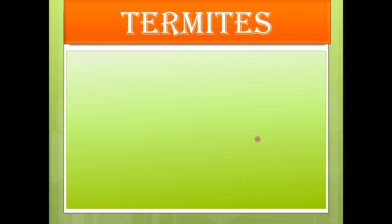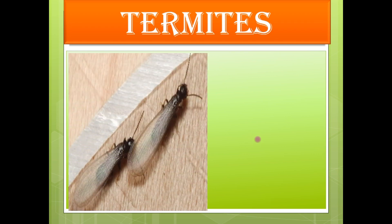The next group is termites. Termites belong to the insect family. Their habitat includes soil, wood, decayed trees, and leaves. Usually they are detritivores, feeding on dead plants and trees. Some of them can even feed on plastic and paper. They also make use of pheromones to lead a very active and smart social life.